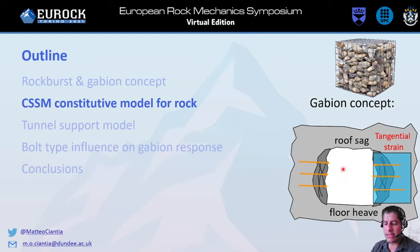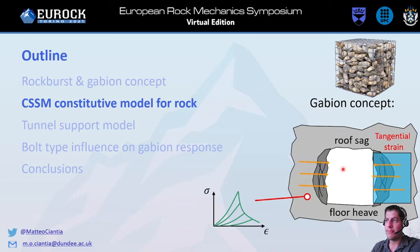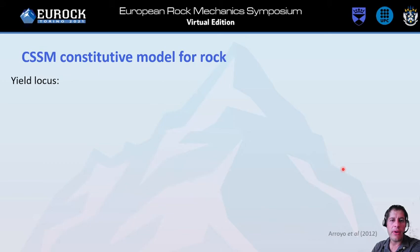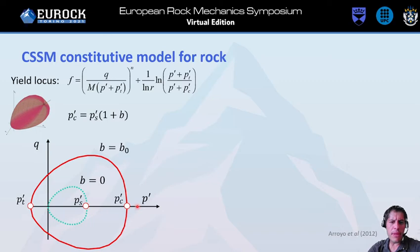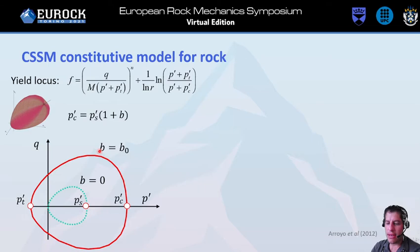For our work, we used a critical state soil model that was modified to account for rock behavior. We need a yield locus that tells us the region where we are elastic and where we start yielding. Here is the expression of our yield surface depending on parameters N, R, and M, which rule the shape of the yield surface. In the triaxial plane, the initially unbonded material — whose internal variable is P_con_S — can increase the size of the yield surface thanks to a bonding-related variable. As bonding increases, we have a larger elastic domain.